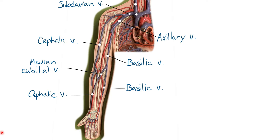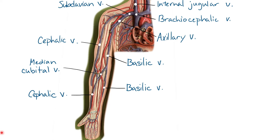On each side of the body, the subclavian vein merges with the internal jugular vein to form the brachiocephalic vein. The left and right brachiocephalic veins then merge to form the vena cava. None of these veins require left or right prefixes because they are symmetrical on both sides. To summarize the routes: blood can travel all the way up the cephalic side to the subclavian, up the basilic side to the axillary, or start in the cephalic, cross via the median cubital vein into the basilic, and end up at the axillary vein.